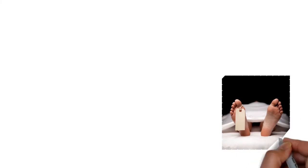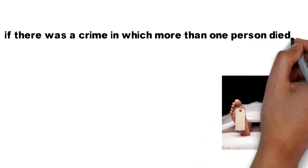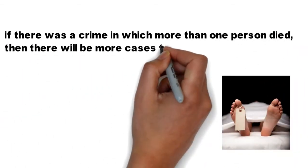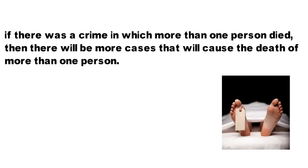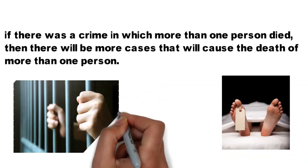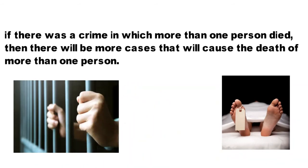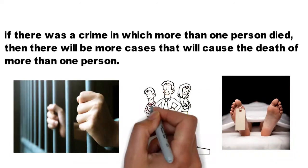If a crime in which one person died was published, it will lead to more crimes in which one person will die. If there was a crime in which more than one person died, then there will be more cases that will cause the death of more than one person. Usually, they will be similar to the first crime. A similar crime that happens to people with similar characteristics of the first person, whether it's a man or a woman, his or her skin color, age group, and more.